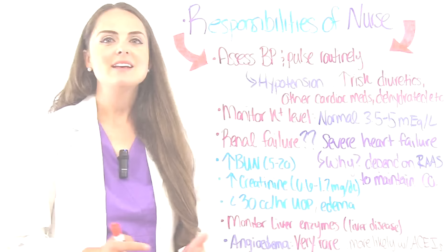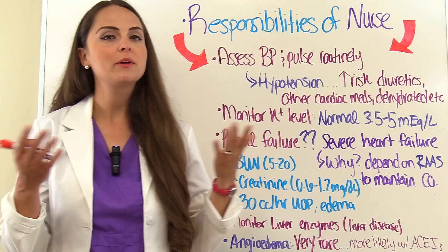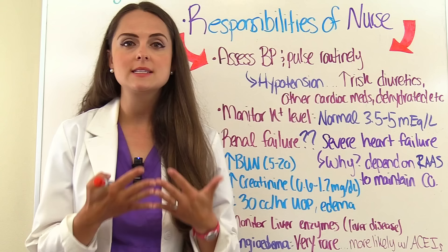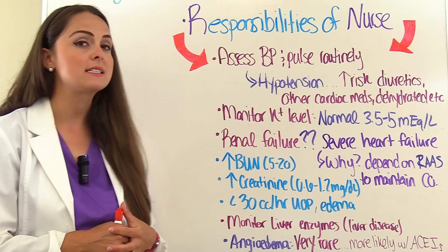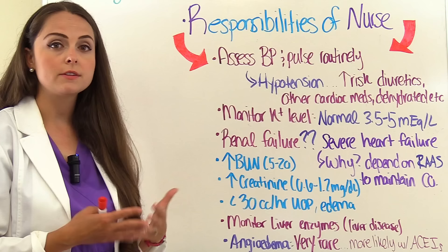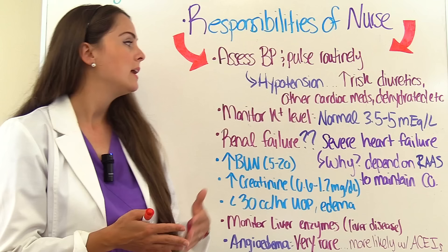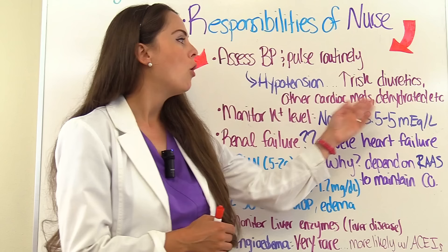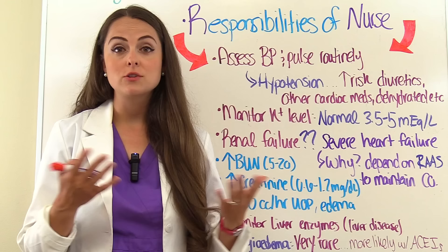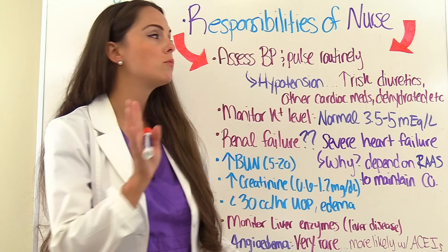Now let's talk about the responsibilities of the nurse. Since ARBs lower blood pressure, we want to assess blood pressure and pulse routinely, watching out for hypotension where the systolic drops below 90. Some patients have an increased risk of hypotension, especially if they're taking diuretics along with an ARB — diuresing them can bottom out their blood volume. Also monitor closely if new cardiac medications are started, or if the patient is dehydrated, as this medication affects how the kidneys handle sodium and water.